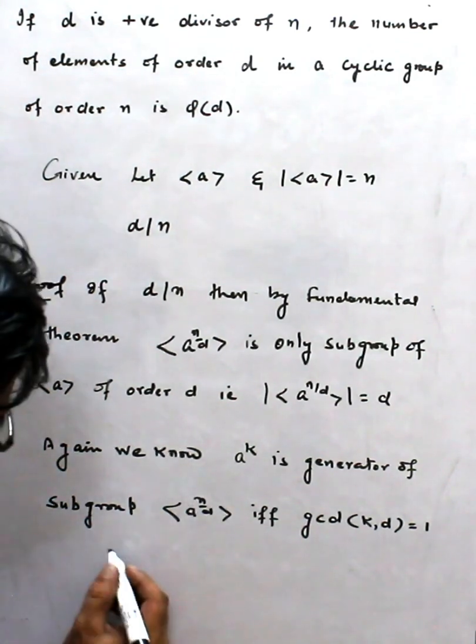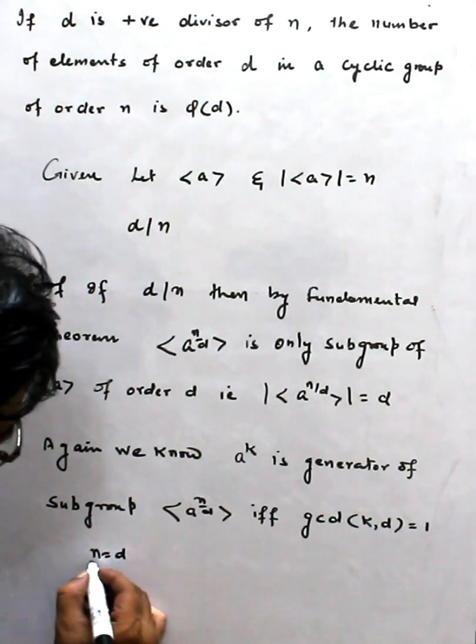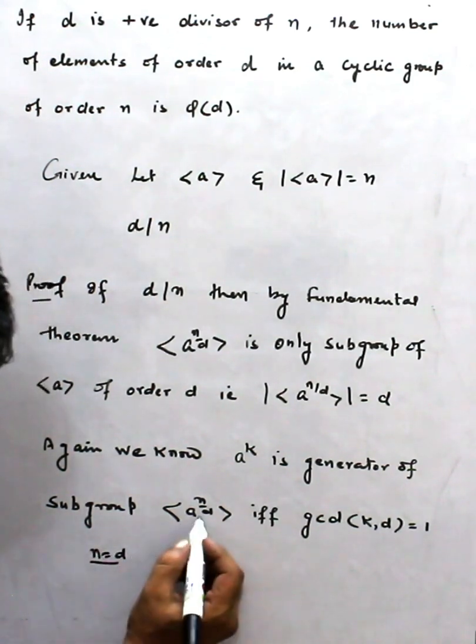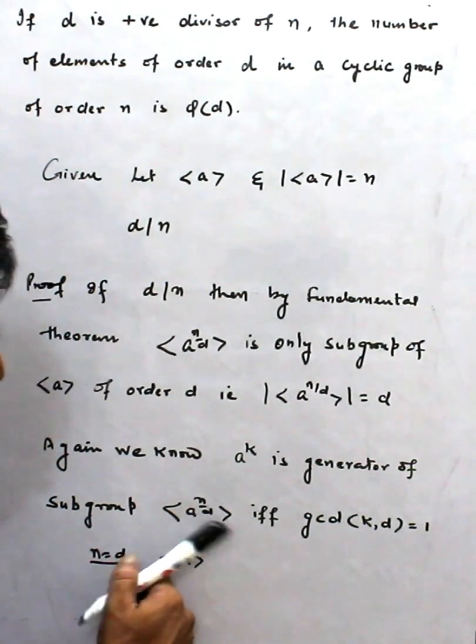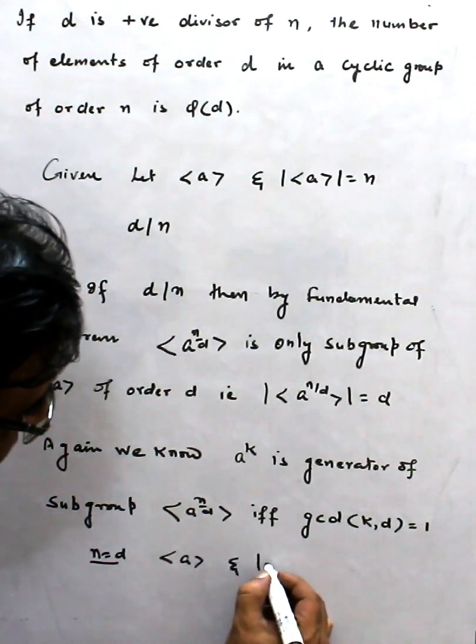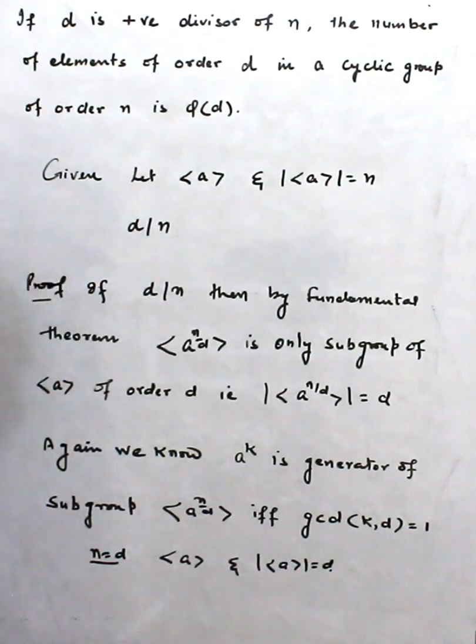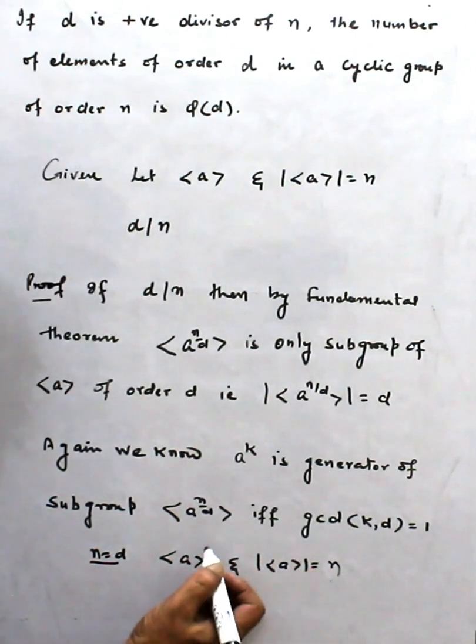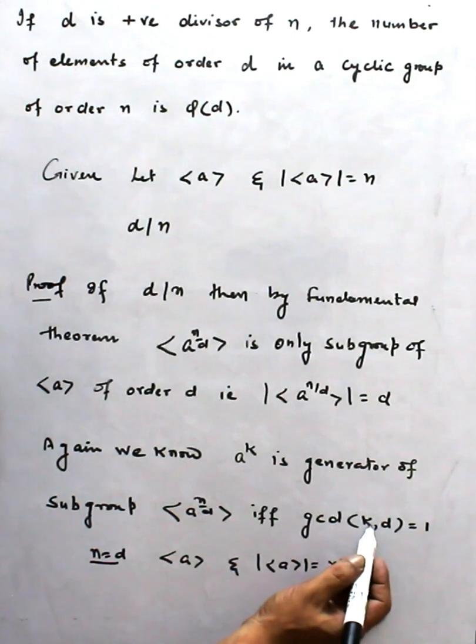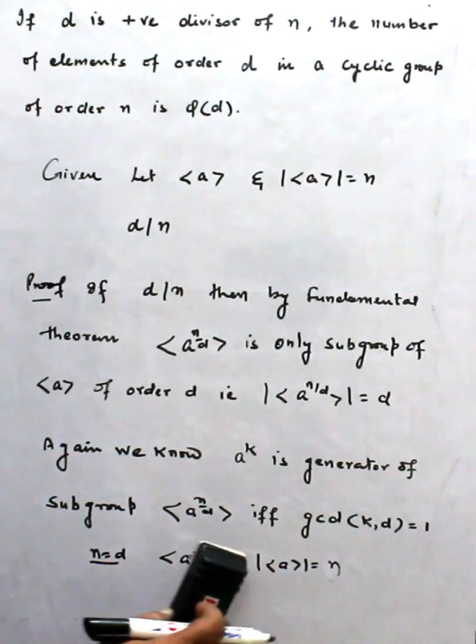If I take n equal to d, then this becomes <a^k>. That means this is the original cyclic group and its order becomes n. That means a^k is a generator of this. Anyway, this is an unnecessary part.